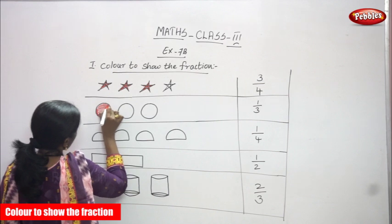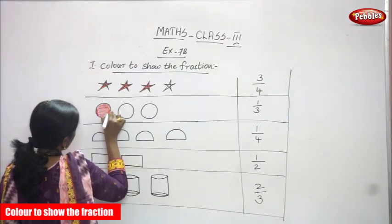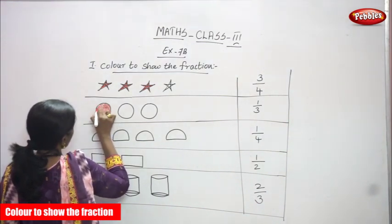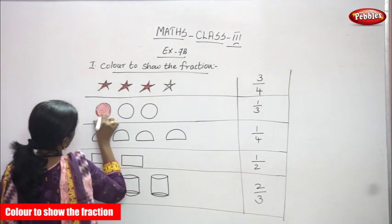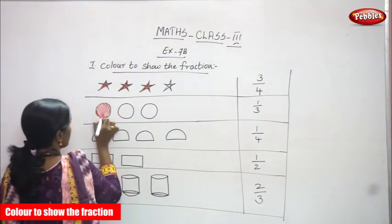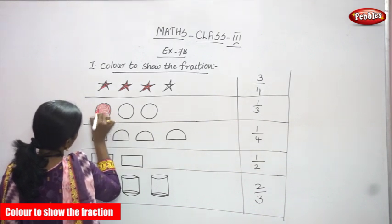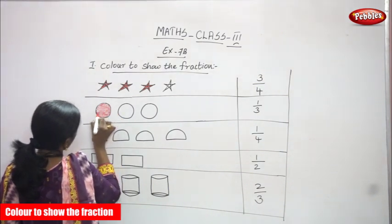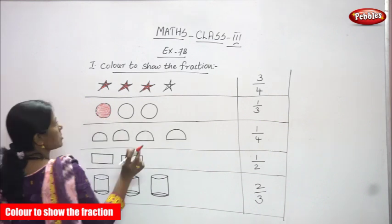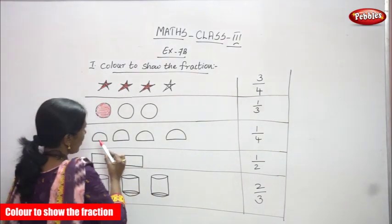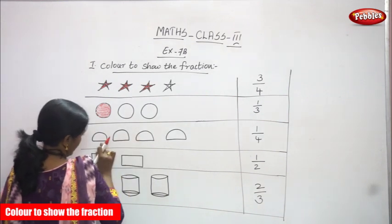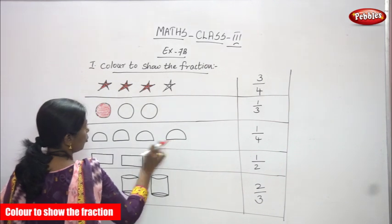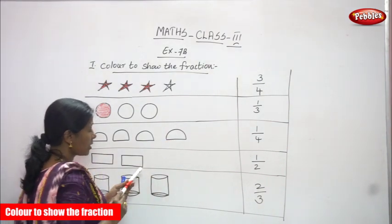Only 1 circle. Now here, what is this? One half circle, two half circle — first, second, third, and fourth. One, two, three, four — four half circles. I have to shade only one half circle.